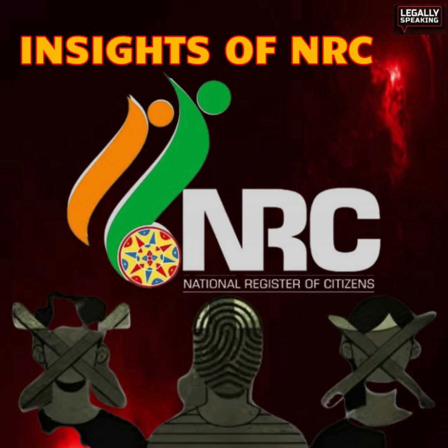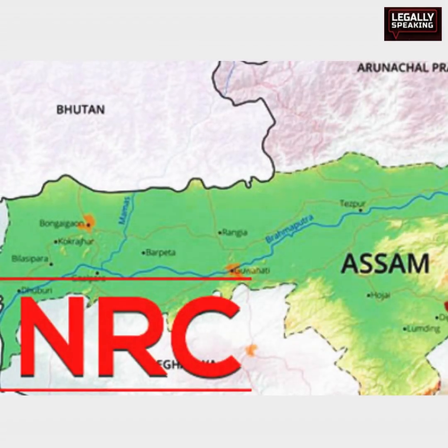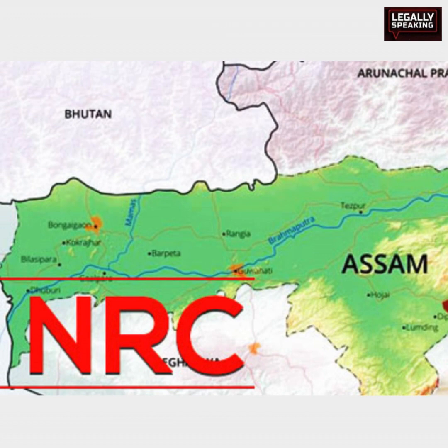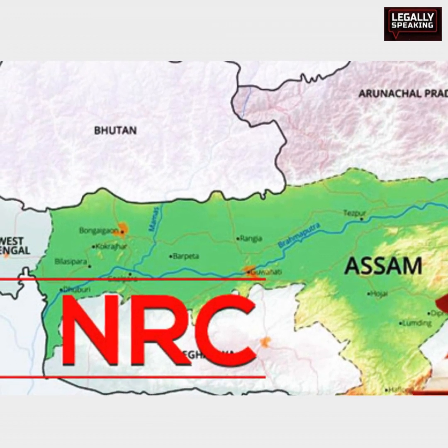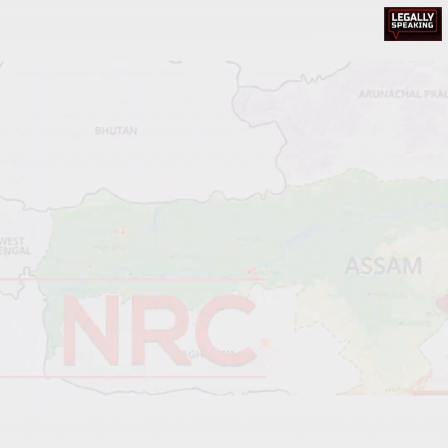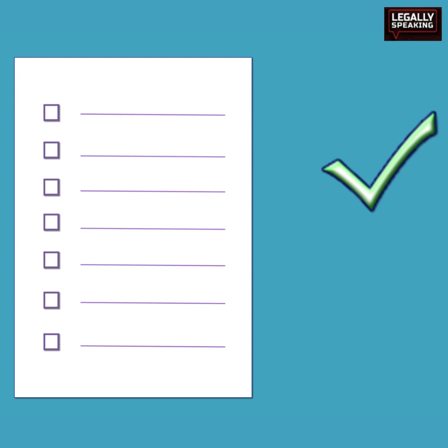The National Register of Citizens for the year 1951 was compiled subsequent to the 1951 census, detailing the houses or holdings in each village in a sequential manner. It listed the occupants of each house or holding, including their names and corresponding numbers.